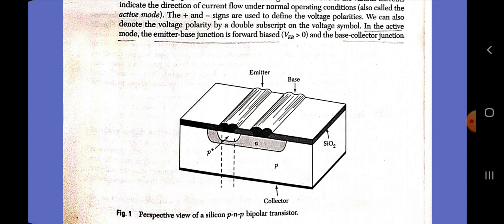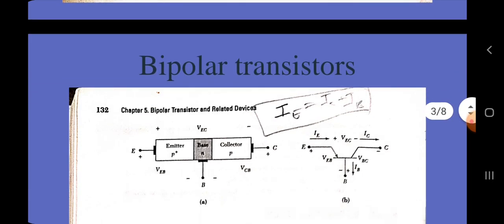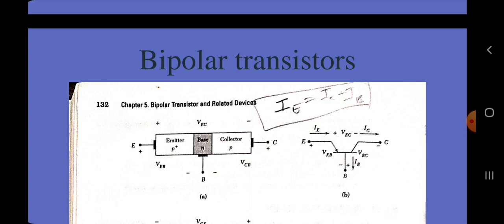It should be noted that concepts developed for the PN junction can be applied directly to the transistor. The figure illustrates the circuit symbol for the PNP transistor. The current components and voltage polarities are shown in the figure. The arrows of the various currents indicate the direction of current flow under normal operating conditions — also called the active mode. The plus and minus signs define the voltage polarities, which can also be denoted by a double subscript on the voltage symbol. In the active mode, the emitter-base junction is forward biased (V_EB > 0) and the base-collector junction is reverse biased (V_CB > 0). According to Kirchhoff's current law, there are only two independent currents for these three-terminal devices.